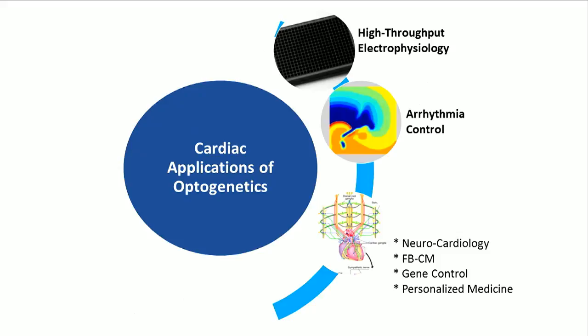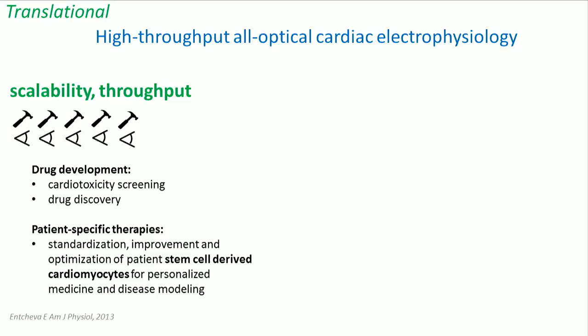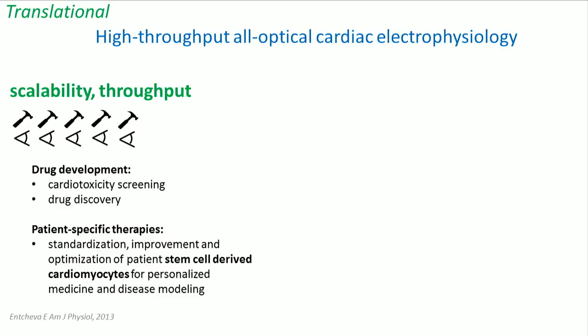The applications in the cardiac area are numerous, but tonight I only have time to talk about two of them. The first is how to use these tools to achieve high-throughput all-optical electrophysiology. We perceive this as the most immediately translational application — not necessarily going into humans. The areas that would benefit include drug discovery, cardiotoxicity testing, and functional characterization of patient-derived, stem cell-derived cardiomyocytes for patient-specific therapies.